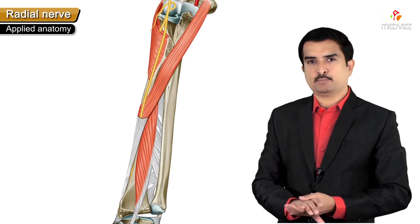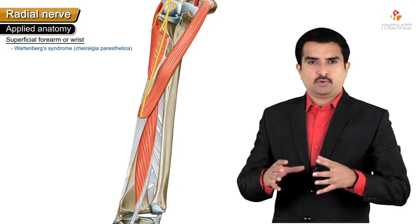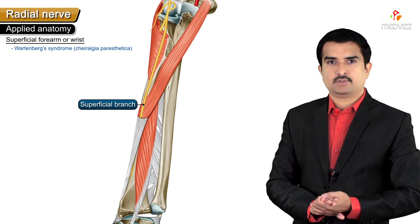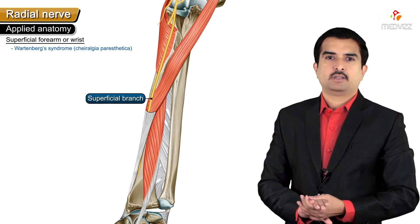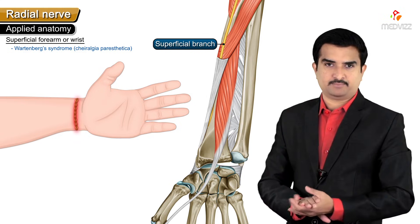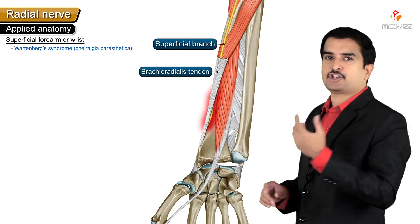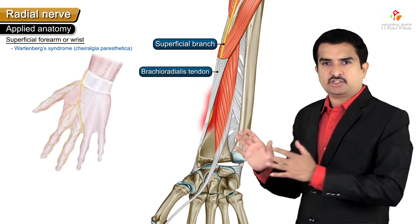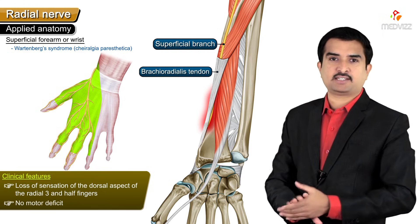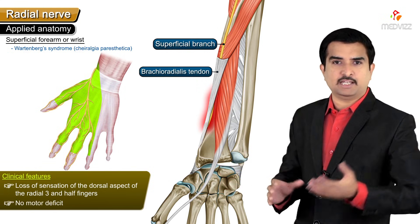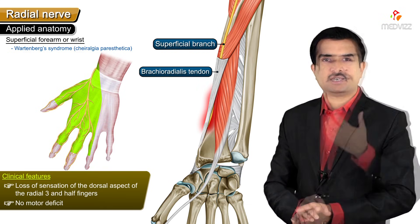One of the most important clinical scenarios is Wartenberg syndrome - injury to the superficial branch of the radial nerve at the wrist or distal forearm. If the wrist is compressed by tight jewelry over its lateral aspect, the superficial branch is compressed beneath the tendinous insertion of the brachioradialis muscle. This results in loss of sensation on the dorsal aspect of the radial three-and-a-half fingers with no motor deficits, because all motor branches have been given off before the wrist. Therefore, Wartenberg syndrome is associated only with sensory deficits.